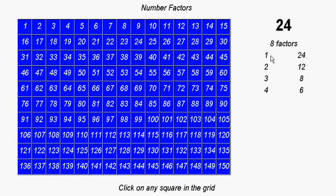1 and 24 are obviously factors of 24. They both go in exactly. But so are 2 and 12. And notice that 2 times 12 is 24. So if 2 goes into 24, so must 12. And so that's a pair of factors.